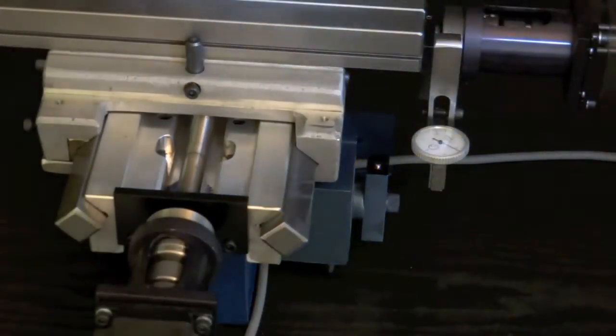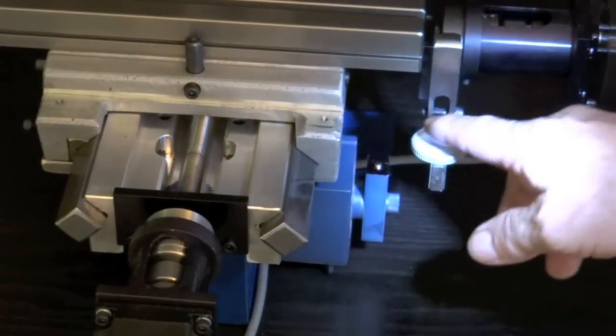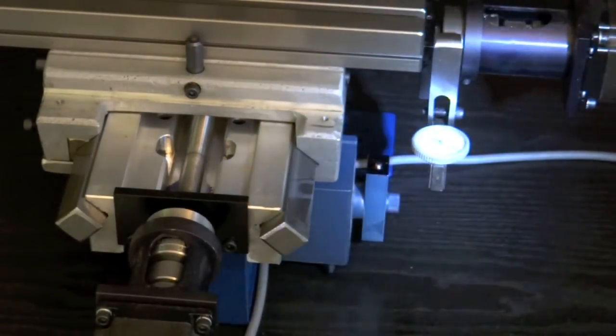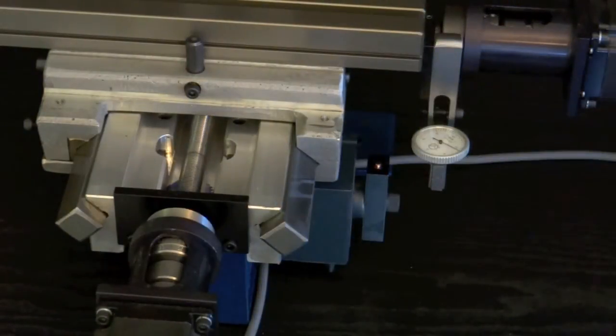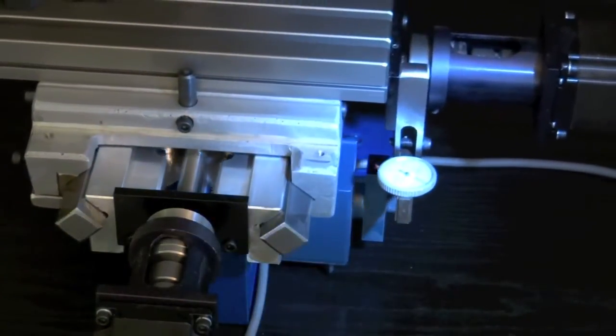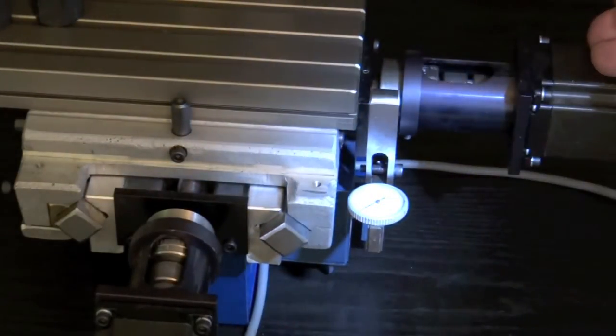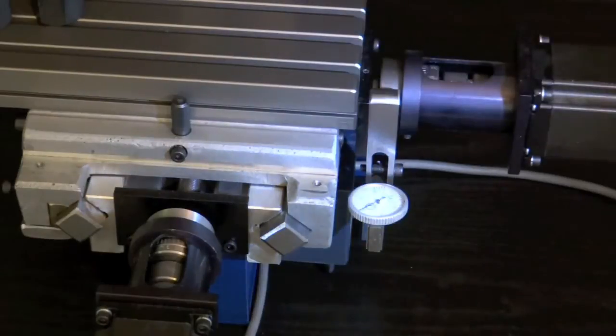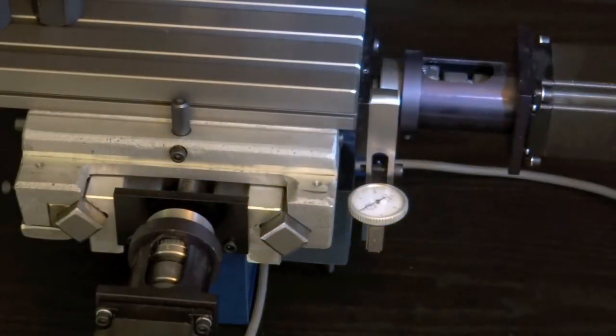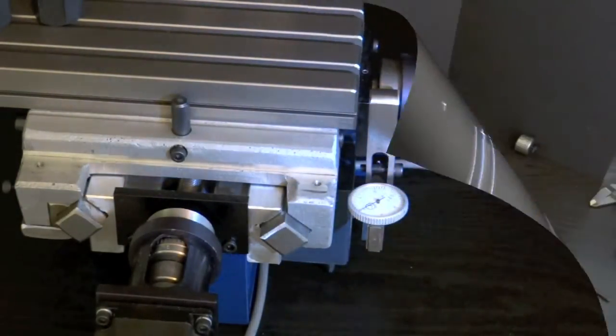I could always dial in where home was, and then I wouldn't have to X zero, Y zero the part constantly all the time. It just made a big help. And there it is right back to zero again. So this is where home is, so at least I always know where home is. I'm going to take this apart and show you exactly how I did it.